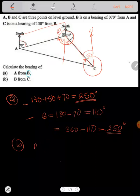the bearing of B from C would just be 360 minus 50, since I already have that. And this will give me 310 degrees. Hope that has made sense. See you in the next video.